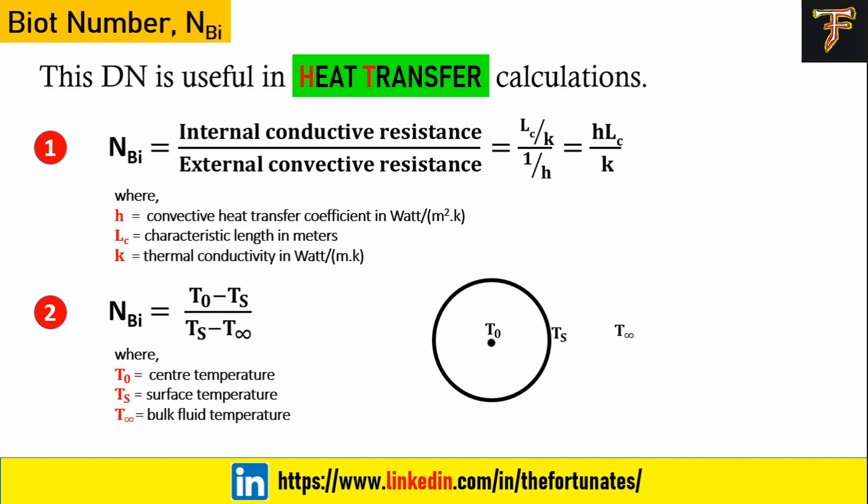If you look into the second point, we have one more expression for Biot number. Before discussing this expression, let me give you a picture of how we come to this. Consider one spherical metallic ball where the center temperature is T₀. The temperature at the surface is Ts, and there will be some air flowing around this ball with temperature T∞, which is the ambient temperature.